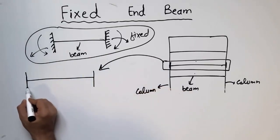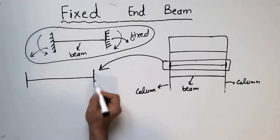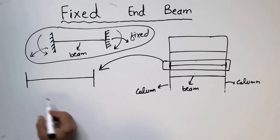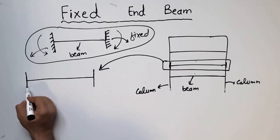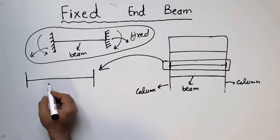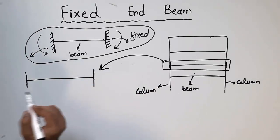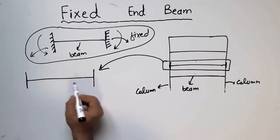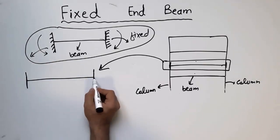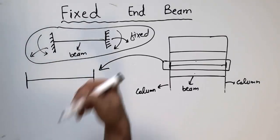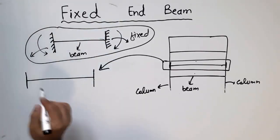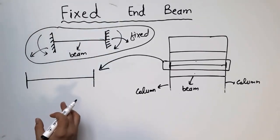This is called a fixed ended beam because of the supports — they are fixed supports on one side and also on the other side. Now, how are these supports made into fixed supports? They are made fixed due to the reinforcement detail.